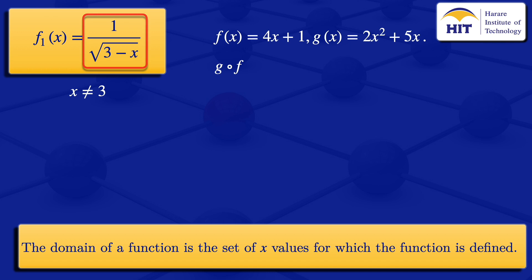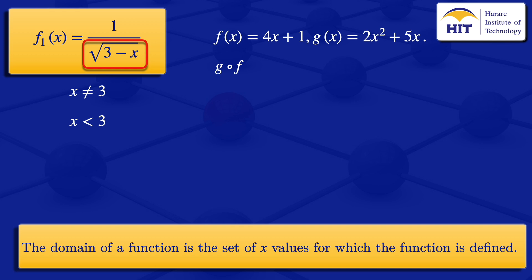The expression under the square root should be greater than 0. So in this case, we need 3 minus x to be greater than 0, which means x is less than 3.